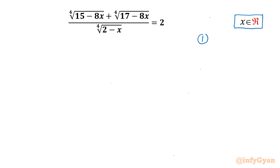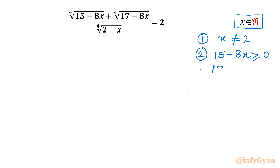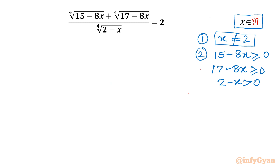I will be writing 3 points. First, the denominator cannot be 0, so x cannot be 2. Second, we have three 4th roots, so the radicands won't be negative. So: 15 minus 8x should be greater than or equal to 0; 17 minus 8x should be greater than or equal to 0; and from the denominator's 4th root, 2 minus x should be strictly greater than 0, as equality cannot hold there. Now I will frame 3 conditions from these inequalities.